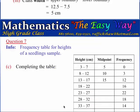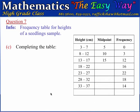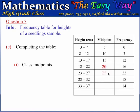Part C wants us to complete the table, starting with the midpoint column. Since midpoint values increase by 5 from class to class, we continue from 15 and add 5 for each subsequent class: 20, 25, 30, and 35.